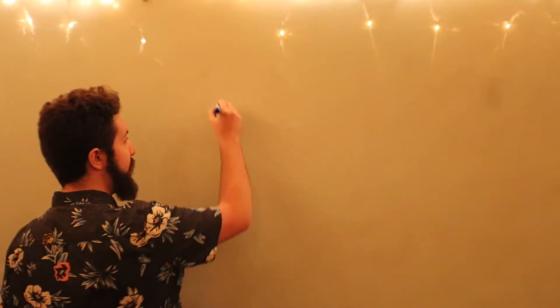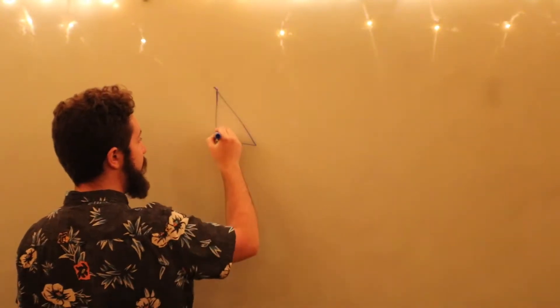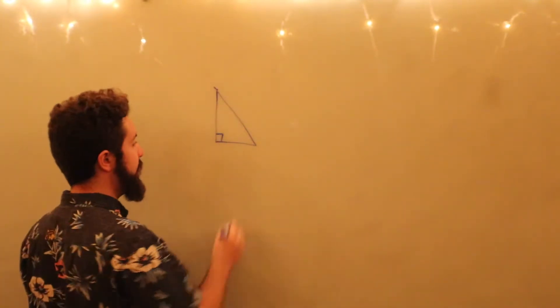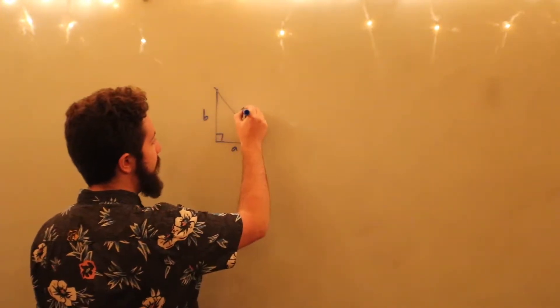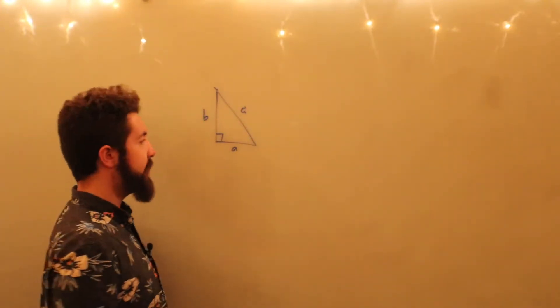So let's create a construction here. We're going to start with our right triangle, which is what the Pythagorean Theorem is about. We're going to label the legs A and B, and the hypotenuse is going to be a length C.